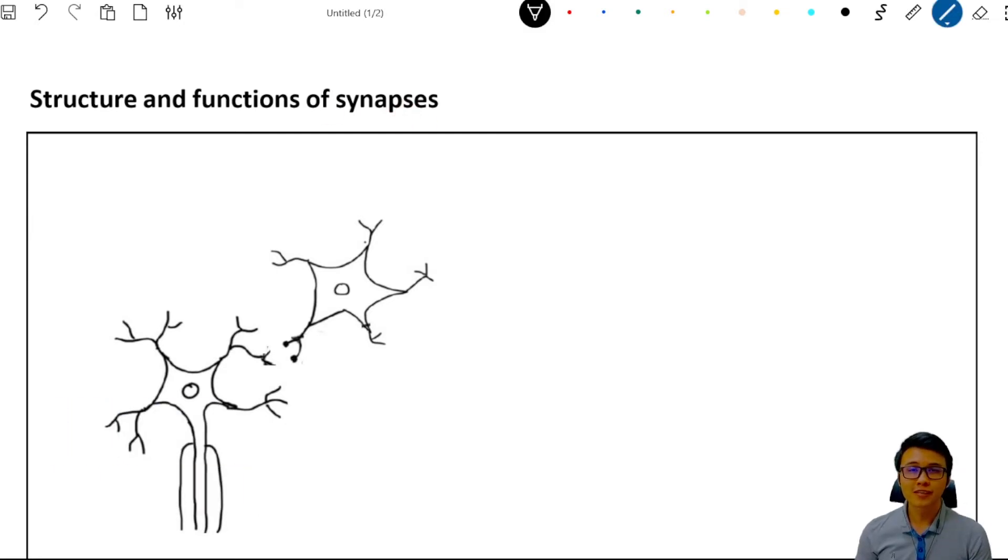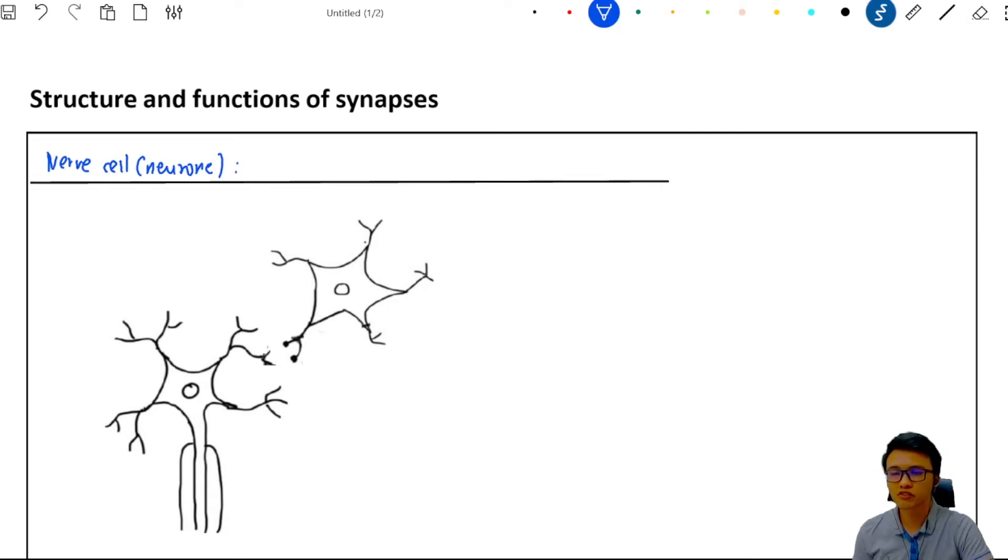Now before we start the lesson, there's one thing that you guys need to know. What is the function of the nerve cell or so-called the neuron? It has the function of sending information throughout our body by using electrical impulses.